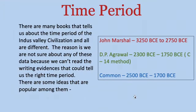Our second topic is time period. When we talk about from when until when this civilization existed, there are many books that give different time periods. The reason is we are not sure about the exact data because we cannot read the written evidence that could tell us the right time period. There are basically three popular ideas that people believe to be true.